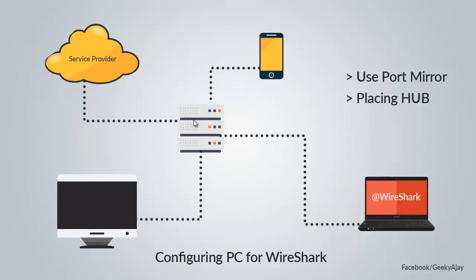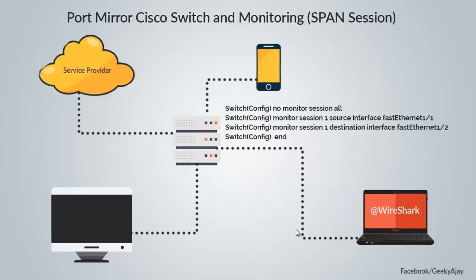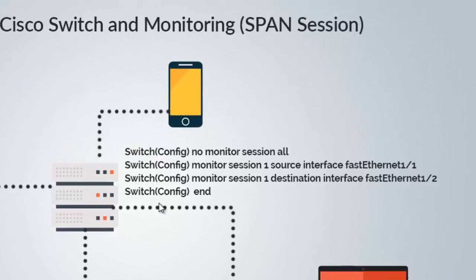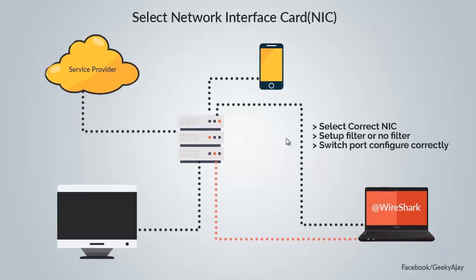Here is the basic configuration of port mirroring on Cisco switches. The first command is 'no monitor session', which clears all old sessions established on the switches for port mirroring or spanning. The second line defines the source, and the third line defines the destination of the Fast Ethernet interface present on the switches.